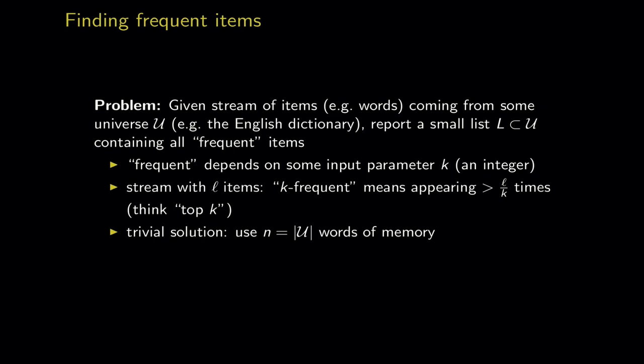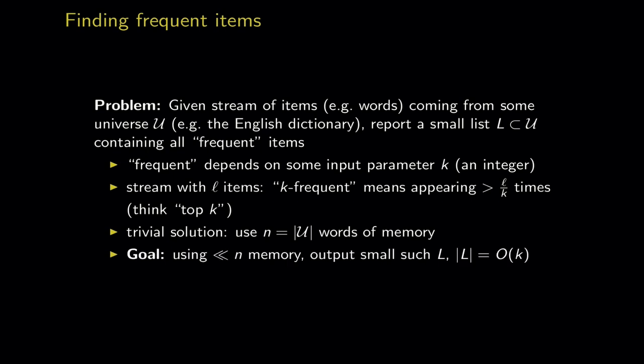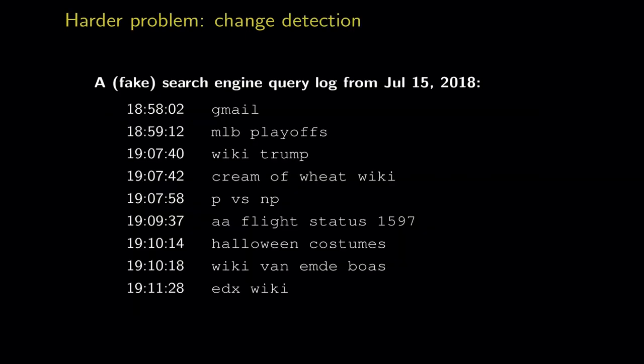I won't solve the problem exactly. One notion of approximation is requiring items to be more than a 1/k fraction frequent. Another is allowing the list to have false positives — you may report some non-frequent items, but only O(k) false positives — while all truly frequent items must appear. There's a formally harder problem called change detection: given query logs from two days, identify who changed a lot in popularity. For example, on Amazon Prime Day, 'prime' had a large change in popularity compared to the previous day — Amazon's site crashed from the load.